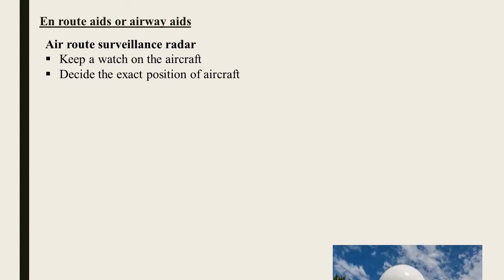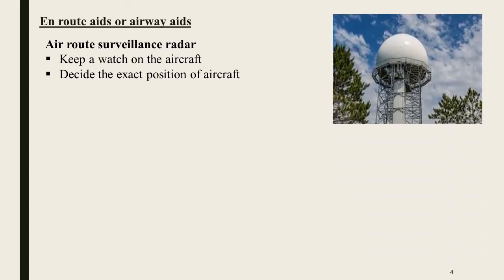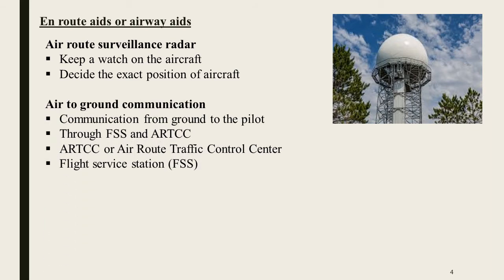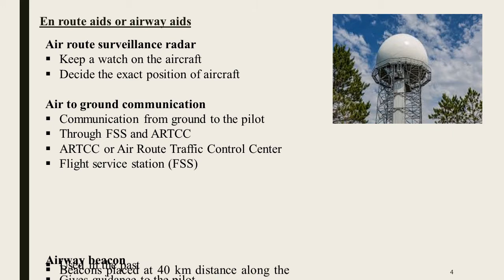First, air-road surveillance radar. It helps to decide the exact position of aircraft. Second, air-to-ground communication — communication from the ground to the pilot. It is done through FSS, that is Flight Service Station, and ARTCC, that is Air Route Traffic Control Center.